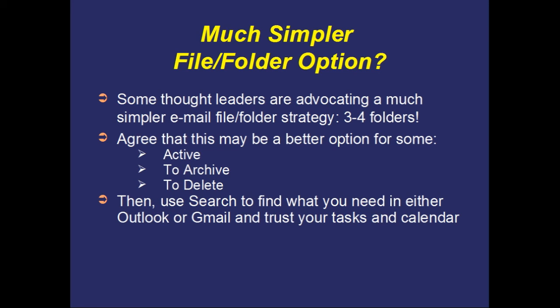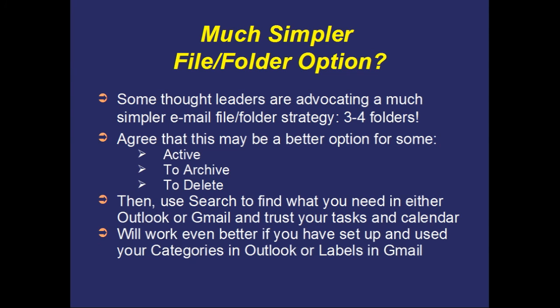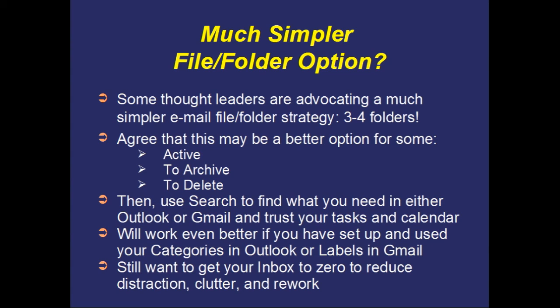If you use this structure, when you need to go back and find an email — whether in the Active, Archive, or To Delete folder — you would use the search option built inside of Outlook or Gmail to find what you need. You're not searching in the inbox; you're searching in one of these three subfolders. And if you've set up categories in Microsoft Outlook or labels in Gmail as we've discussed, it's going to work even better, because now you have connections built in for more efficient searching.